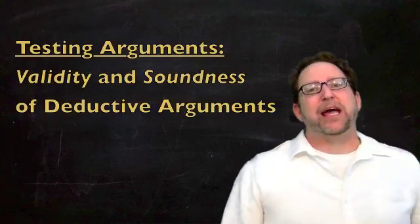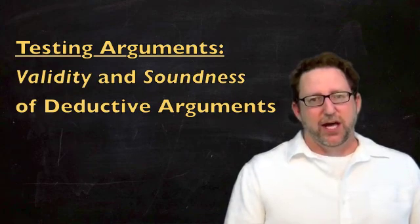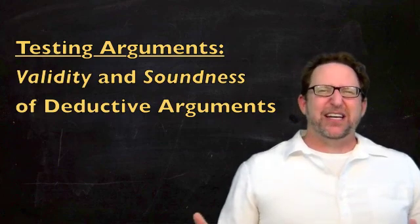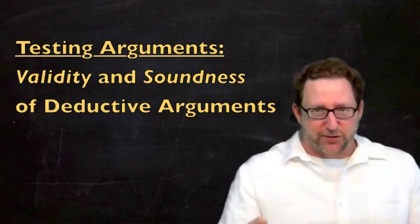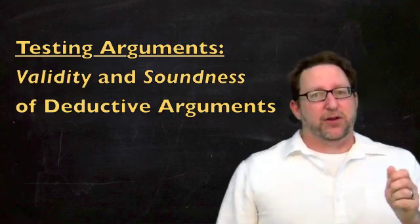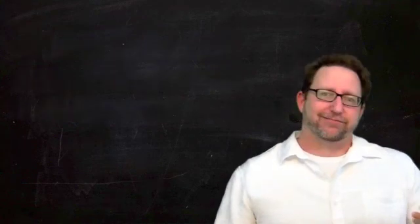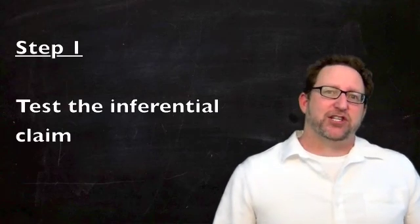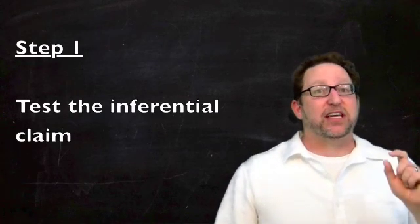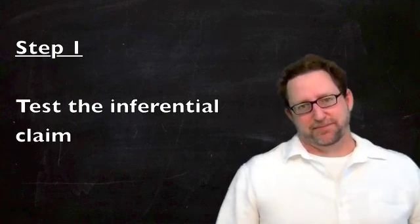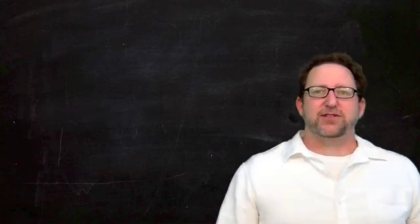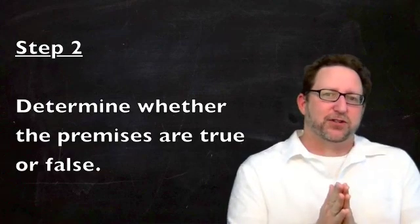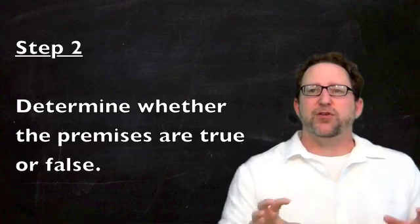Now we have to turn our attention to testing arguments. We understand the difference between a deductive argument and an inductive argument, and now we need to ask of any argument in front of us: is this a good one or not? The way we do this is a simple two-step process — well, simple at one level, though it will get more complicated. The first thing we need to judge, whether it's a deductive or inductive argument, is the inferential claim. The second thing we need to judge is the truth or falsity of each of the premises, and we keep these two steps very distinct.